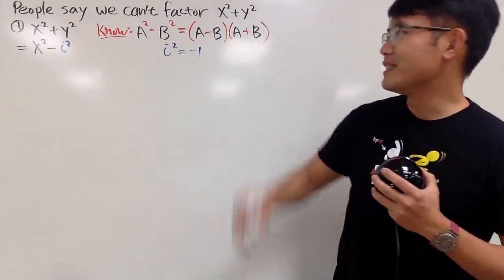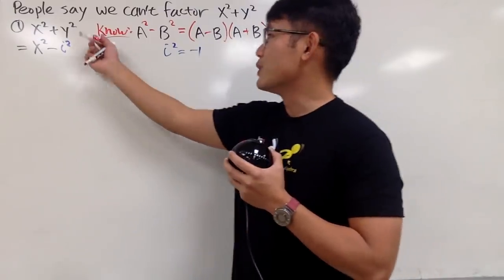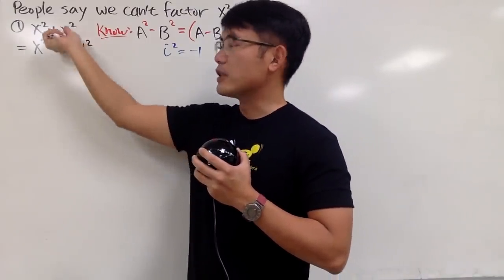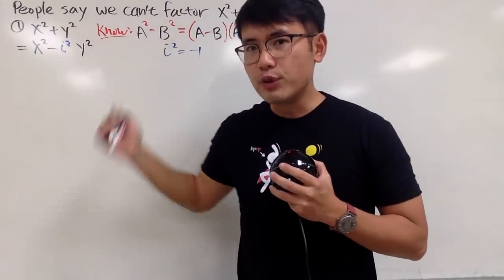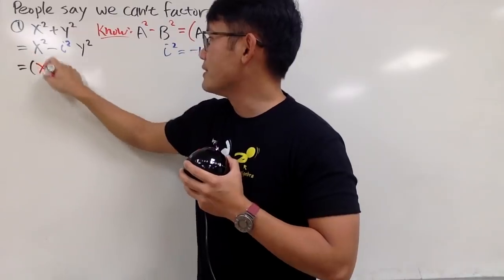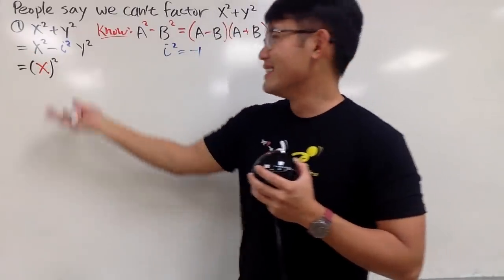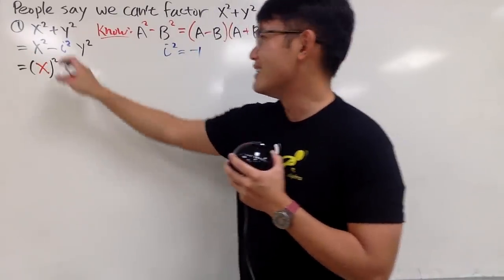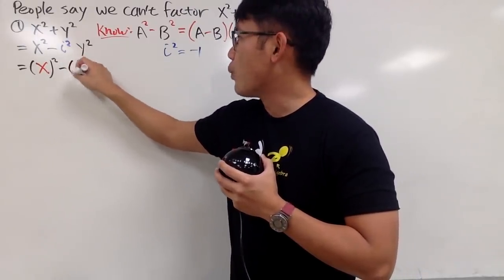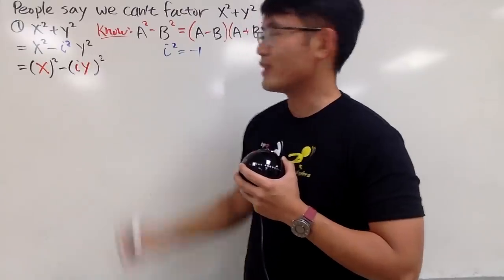Keep this in mind, i squared is equal to negative 1. And as we can see, we can still just write down the y squared. And this is still the same as that. And the beauty of doing so is, we can see the first term is x. Put a parenthesis around it, and then square it. So now this is much fancier. And this is minus. For the second part, we put a parenthesis. I can put the i and the y inside, and then I square that.